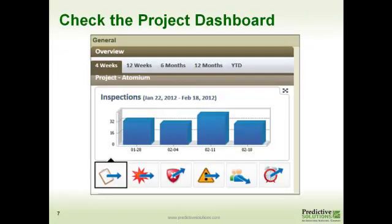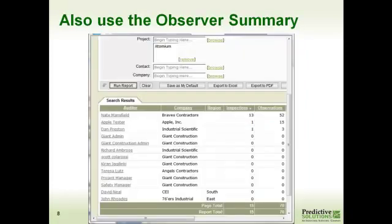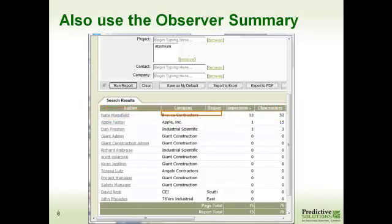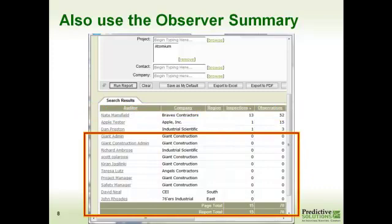You can also check the project dashboard — the arrow going straight indicates there's no increase in the number of observations. You can also use the observer summary: pull up the observer summary, select the project you're concerned with — in this case, Atonium — and take a look. In this example, Nate really is out there doing his inspections, but nobody else is really participating. This provides a coaching opportunity for those in charge of this project, location, or facility.